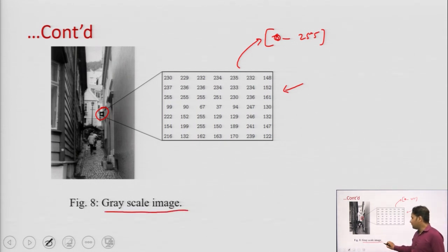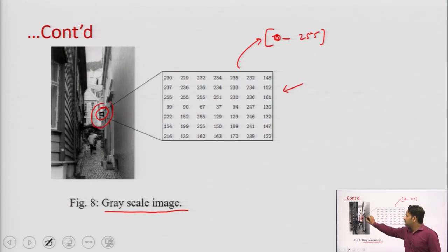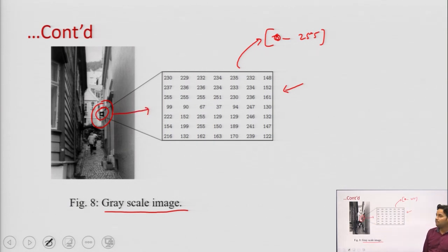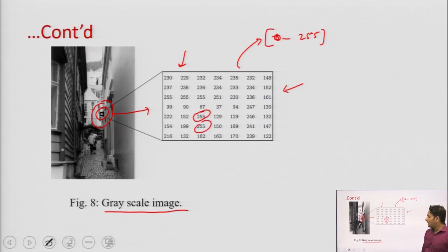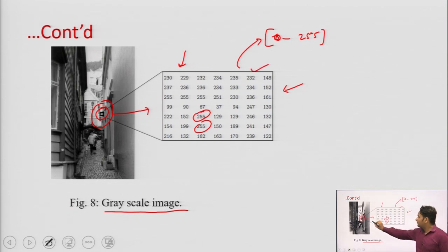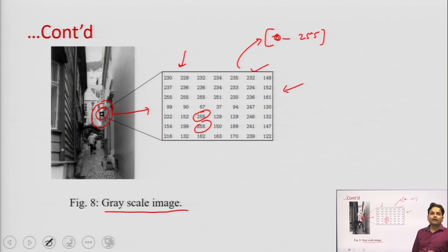The image which belongs to the grayscale type, after extracting that portion in digital form, shows each and every pixel holding a value varying from 0 to 255. The complete white portion gives 255 and the completely black portion gives 0. That is the matrix of the grayscale image.